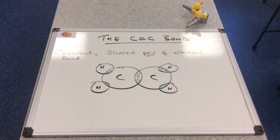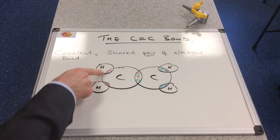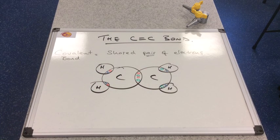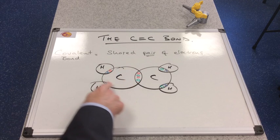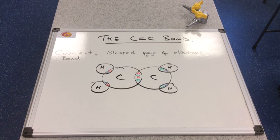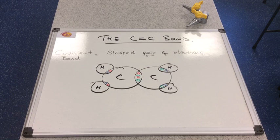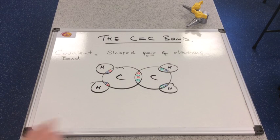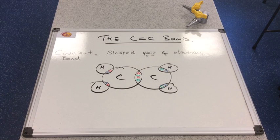And I've drawn up the dot and cross diagram for an ethene molecule, C2H4. So you can see that the hydrogen electrons are represented by the blue crosses. The carbon on the left has the red circles for its electrons, its outer electrons. So carbon's in group 4, 4 outer electrons.